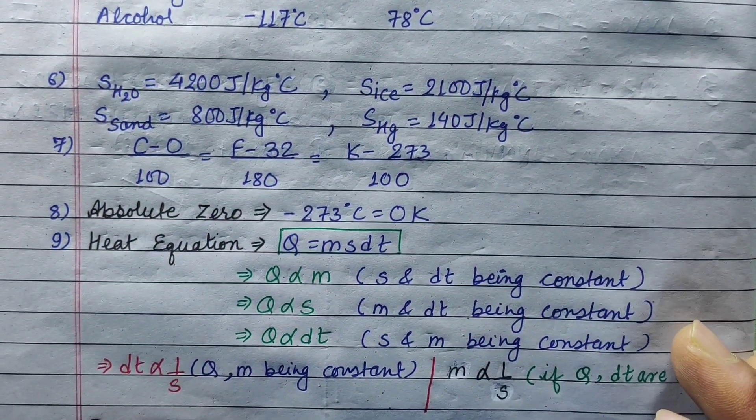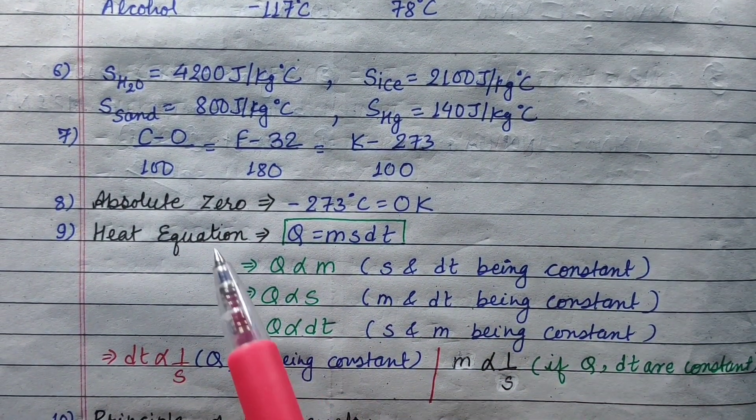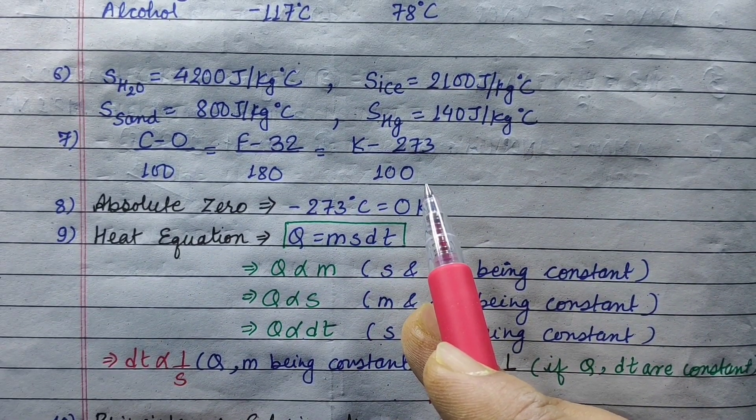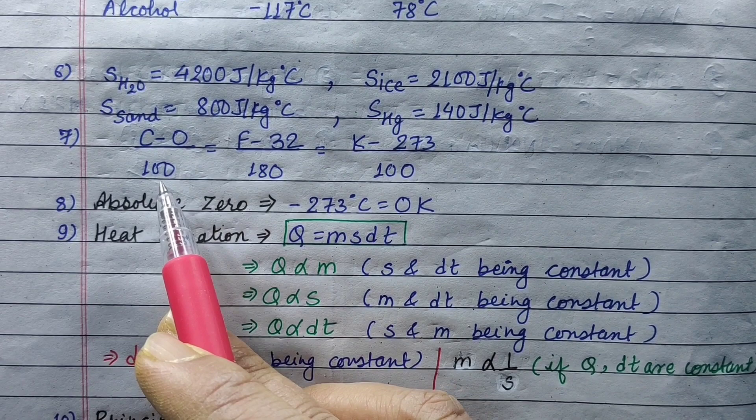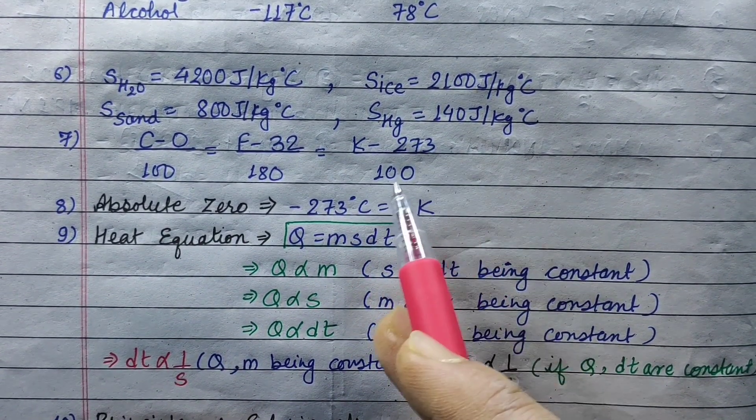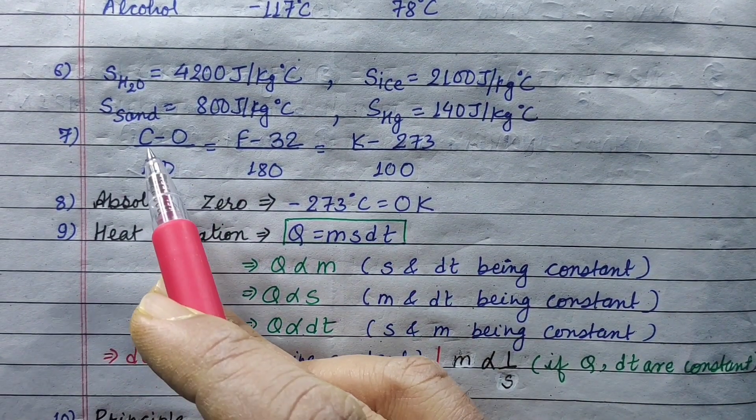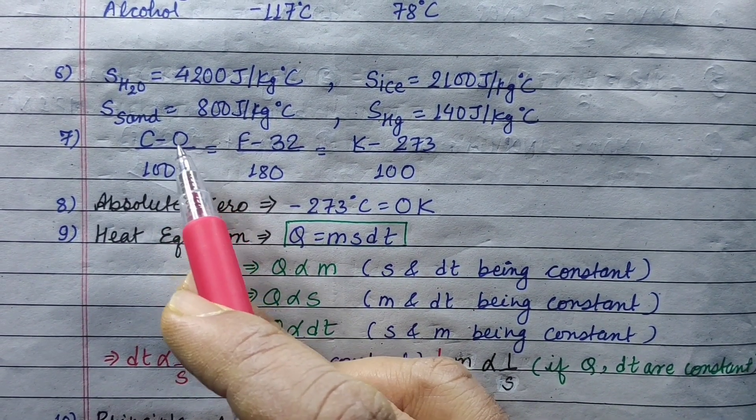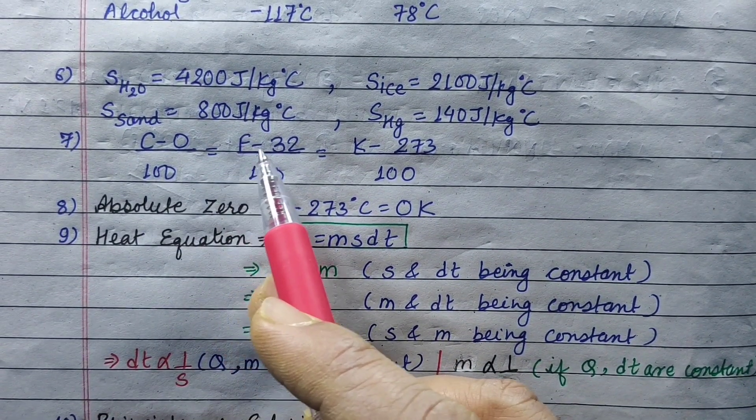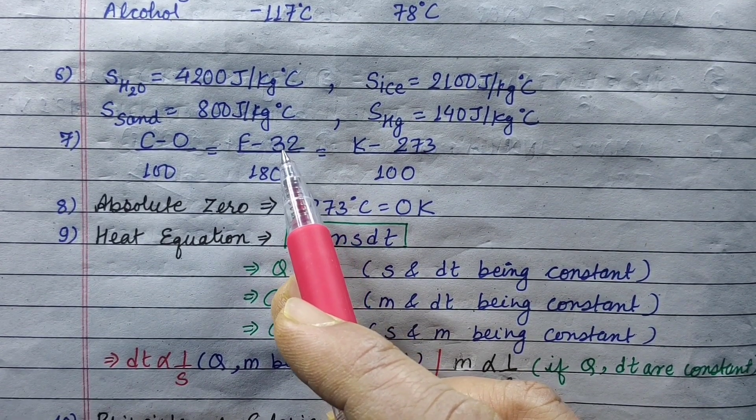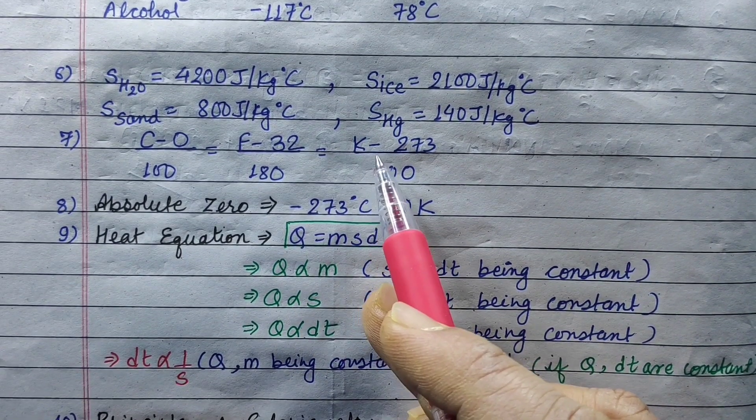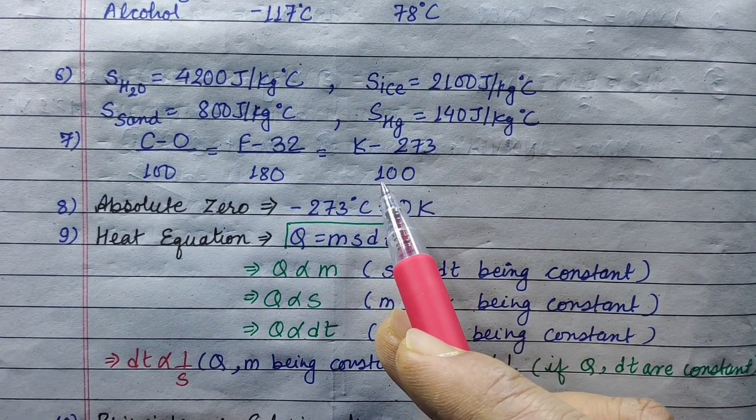For temperature scale conversion: C minus 0 upon 100 equals F minus 32 upon 180 equals K minus 273 upon 100. Celsius temperature minus lower limit upon number of divisions 100 equals F minus lower fixed point 32 upon number of divisions 180 equals K minus lower fixed point 273 upon number of divisions 100.